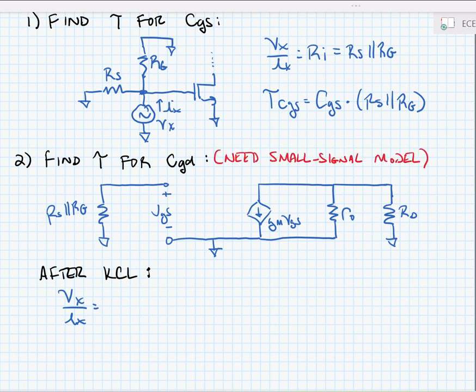Next, we're going to move on to CGD. Now I'll note that sometimes we're going to need a small signal model and this is one case. So here we're going to analyze the capacitance between the gate and drain. So we put a test voltage source and again measure the current that flows through it.